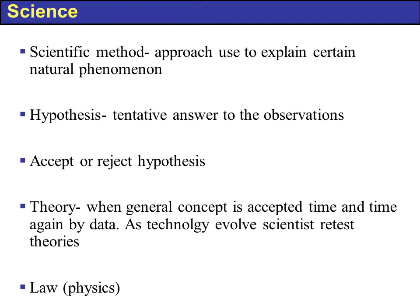Finally, we have theories. A theory is when a general concept is accepted time and time again by data. We run the experiment and get the answer. Somebody else runs the experiment in a different way and achieves the same answer. A third party does it and achieves the same answer but in different ways. This now becomes a theory — when a general concept is accepted time and again by experimentation, it is called a theory.